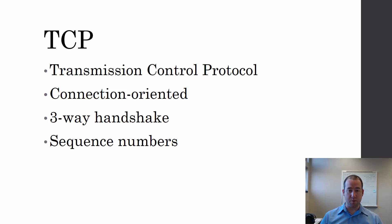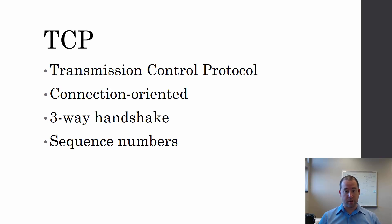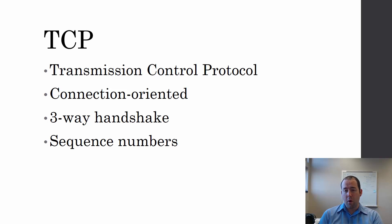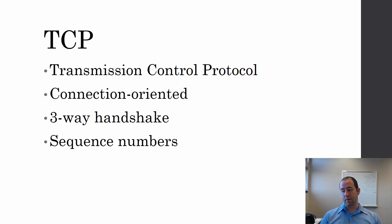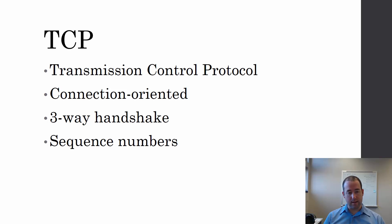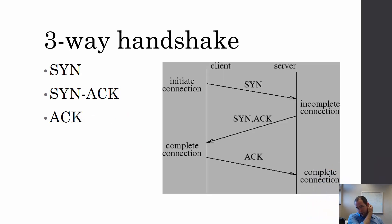TCP, on the other hand — the Transmission Control Protocol — is a connection-oriented protocol, which handles that connection with the three-way handshake. It has sequence numbers, so it's the more reliable of the two protocols, because it uses those sequence numbers to make sure that everything arrives and that the receiver has all of the pieces of the message that was sent. So let's take a look at that three-way handshake.